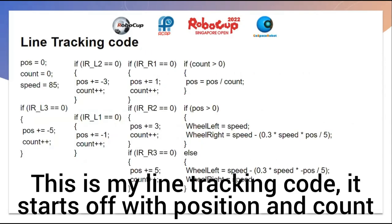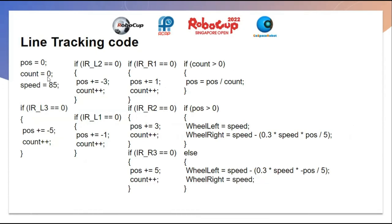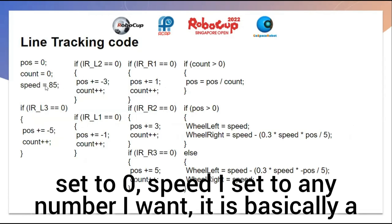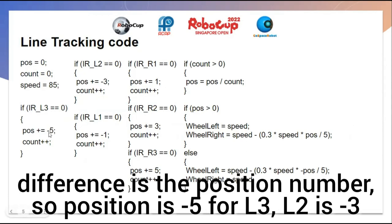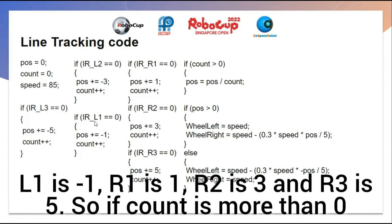So this is my line tracking code. It starts off with position and count set to zero, and speed set to any number that I want. It's basically a repeat for all the IR sensors, but different for each. The difference is only the position number: L3 is negative 5, L2 is negative 3, L1 is negative 1, R1 is 1, R2 is 3, and R3 is 5.